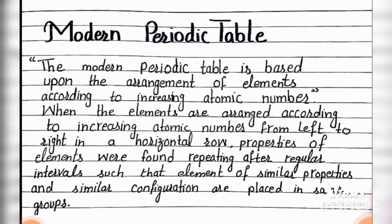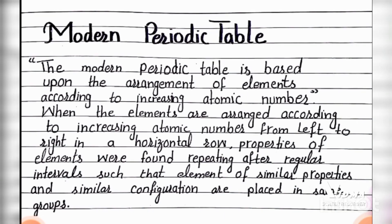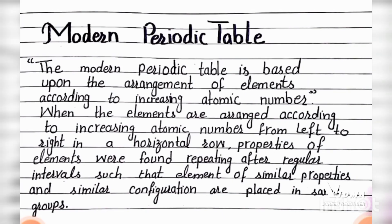When elements are arranged according to increasing atomic number from left to right in horizontal rows, the properties of elements were found repeating after regular intervals, such that elements with similar properties and similar electronic configuration are placed in the same group.